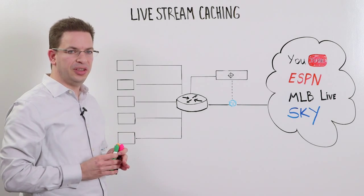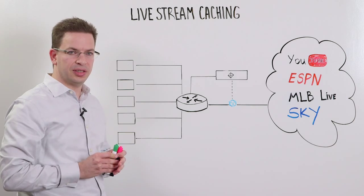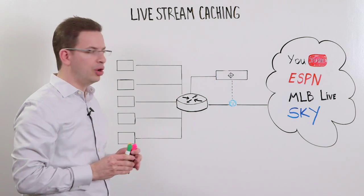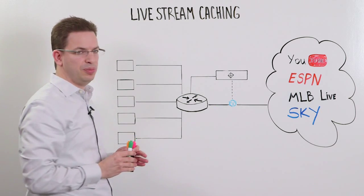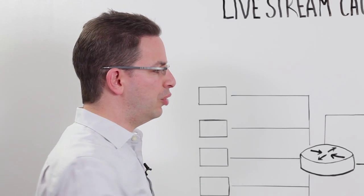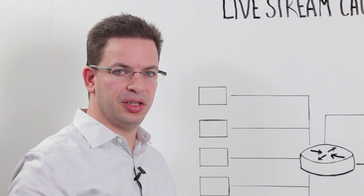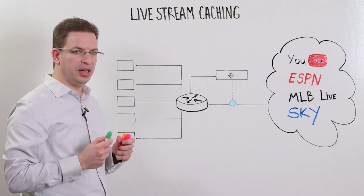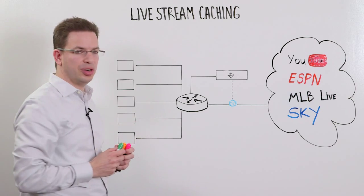Even today, there's a myriad of content sources that stream live events, either from pure over-the-top sources like YouTube Live, or from managed sources like Sky and ESPN used for streaming sports. We've added groundbreaking capability in our Qubi series device that allows us to analyze not only VOD content, but also to identify live streams as they traverse the network.